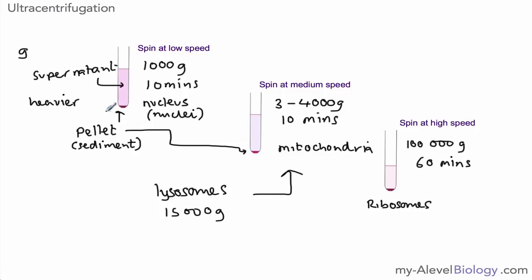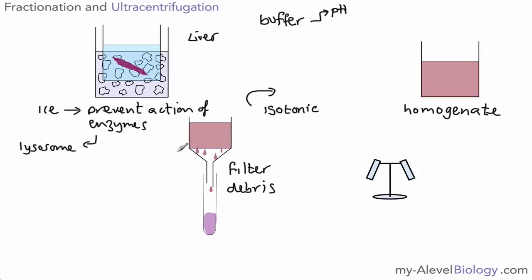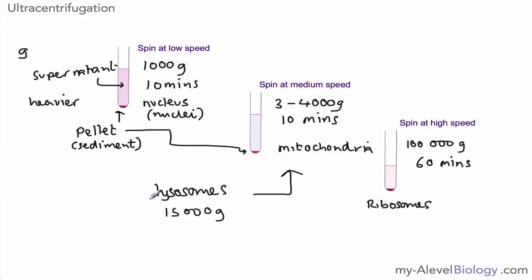Which allows us to separate out the organelles from all the other organelles and see how they work without the interference of other organelles around which might not give us a clear picture of what's going on. So this is a summary of how it all works. Remember you need to be able to describe the process here, why we have isotonic solutions in a buffer and why we have low temperatures and so on. And you should have some idea of which of the organelles come out at which stage.